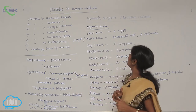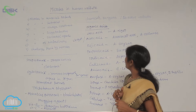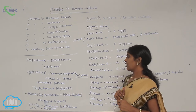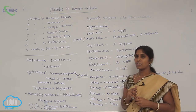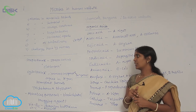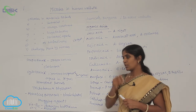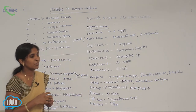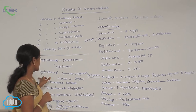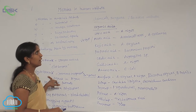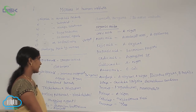Another active biomolecule is Cyclosporine A, extracted from Trichoderma polysporum. It is an immunosuppressive agent used in organ transplant patients to improve immunity and to fight against infections after transplantation. It is obtained from Trichoderma polysporum.